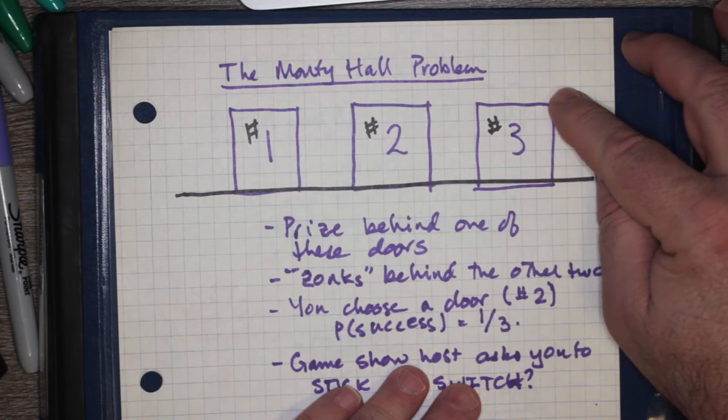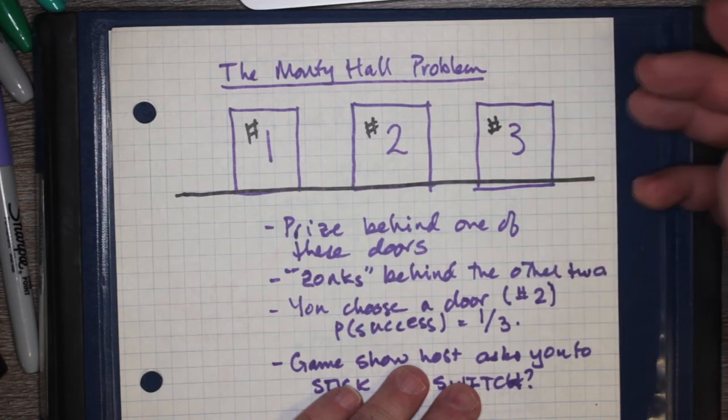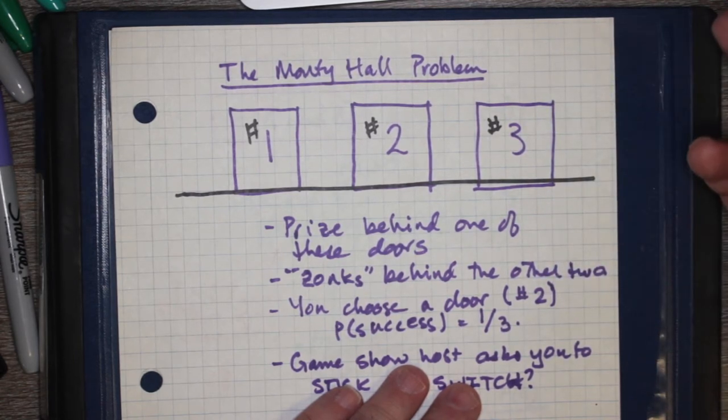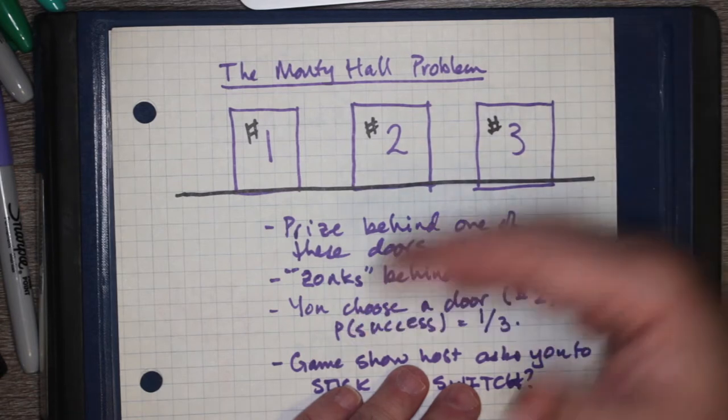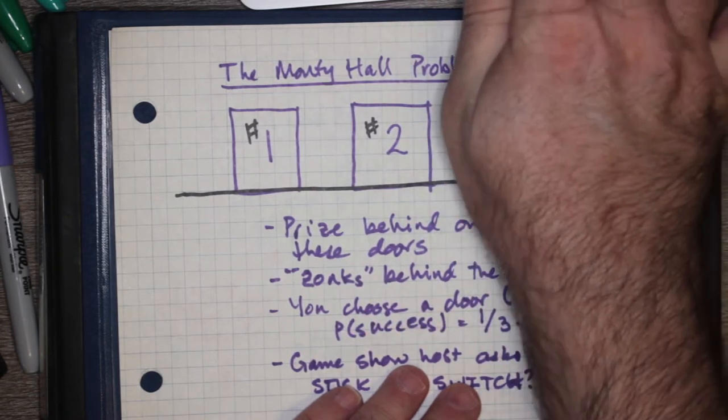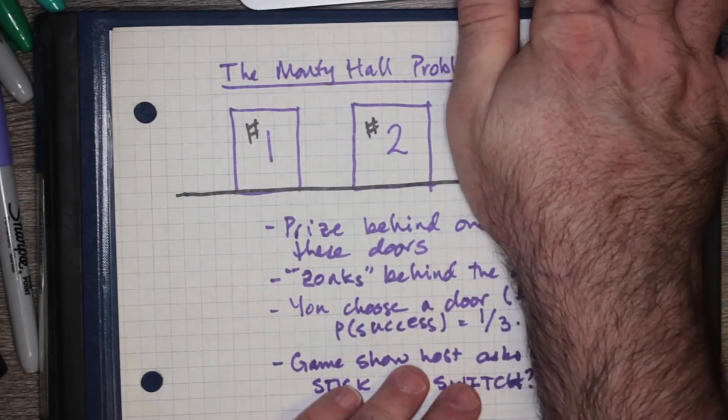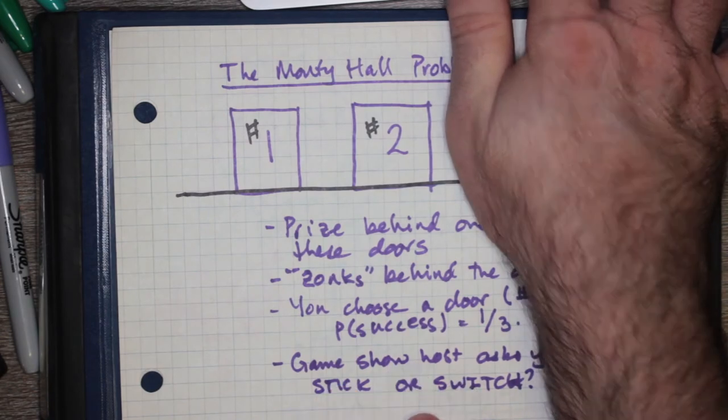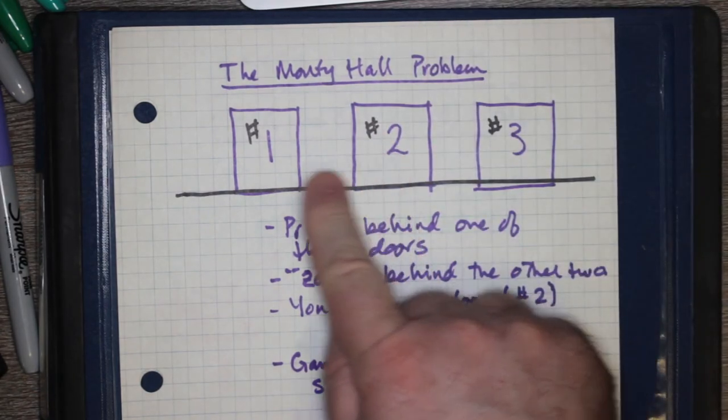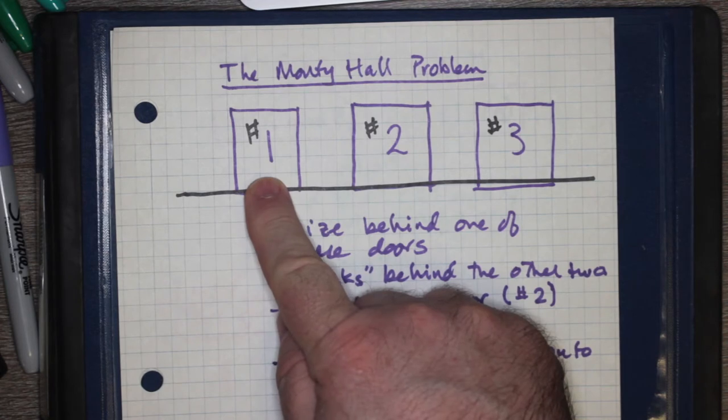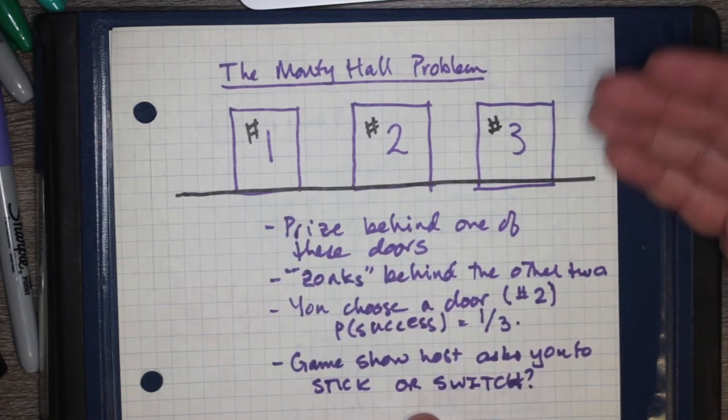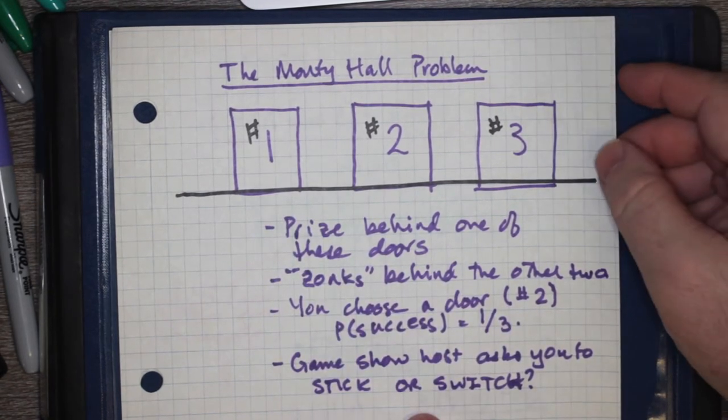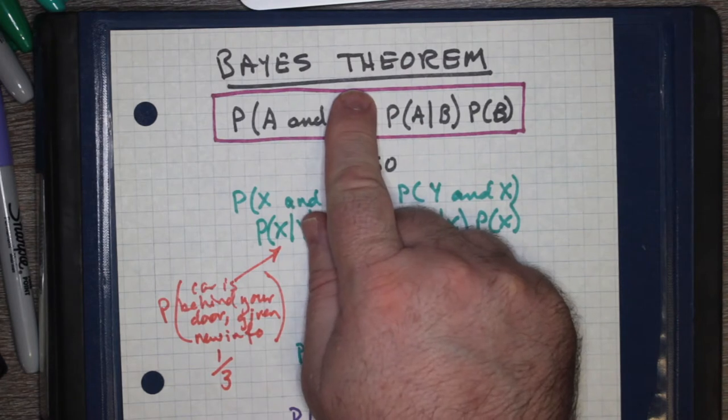Now the game show host tells you, oh I'm going to show you what's behind door number three, and invariably when he does show the contestant what's behind door number three, it's always a zonk. So we're given that door number three is a zonk. Should the contestant stick with his door or switch to the only remaining door?